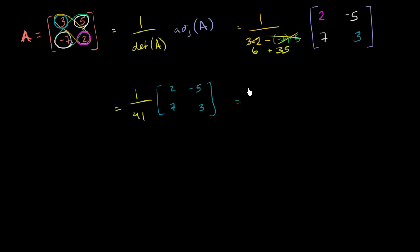So we get, so this is the drum roll part, 2 over 41, negative 5 over 41. And I'm just multiplying each of these elements times 1 over 41. 7 over 41, and 3 over 41. And we are done.